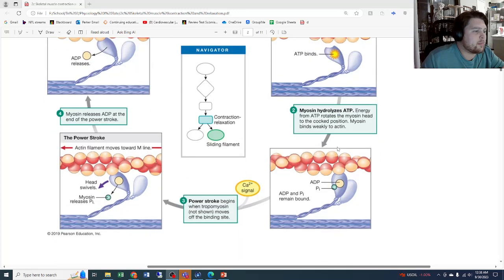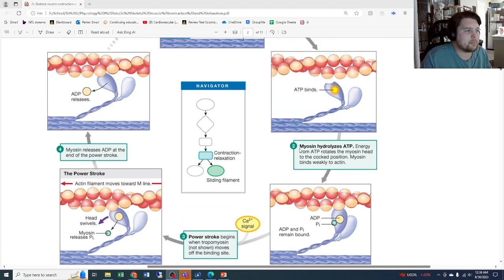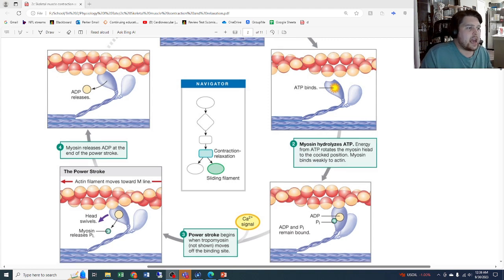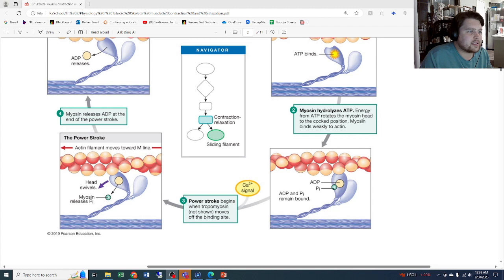If we remember back to week one, we talked about the myosin structure. The myosin head has an ATPase built into it, meaning that it will break down the ATP. That myosin hydrolyzes or breaks down the ATP, and energy from the ATP rotates the myosin head into the cocked position.